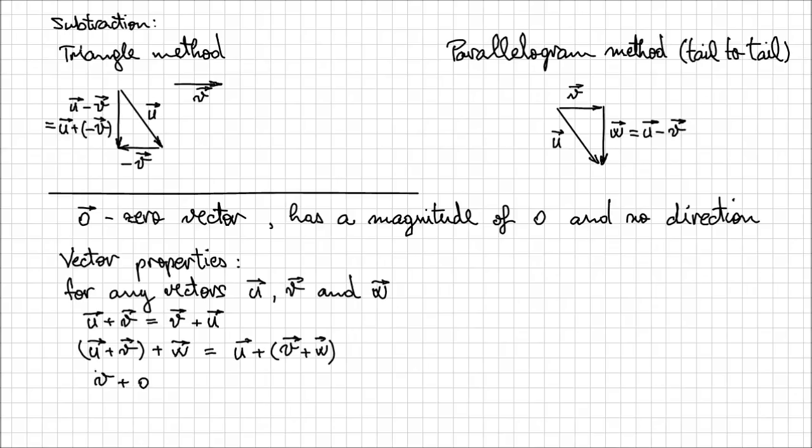And then if you have a vector v plus the zero vector, it's equal to vector v, because that zero doesn't add anything. Or we can say even that equals to zero vector plus the vector v. And this is the identity property. You have pretty much the same properties that you have for addition and subtraction with numbers.